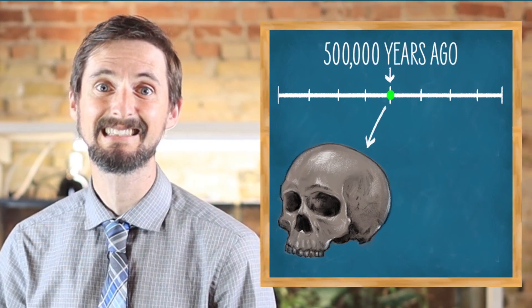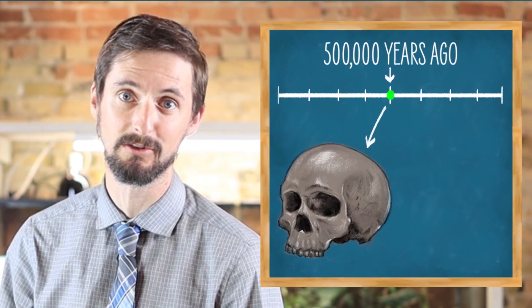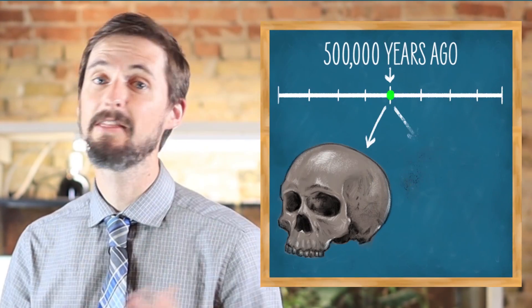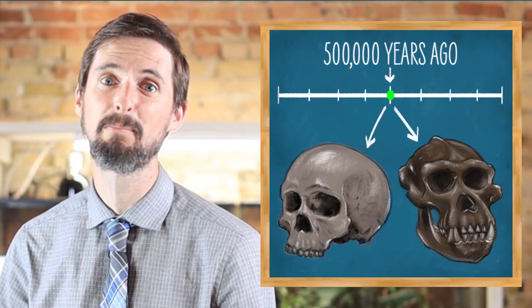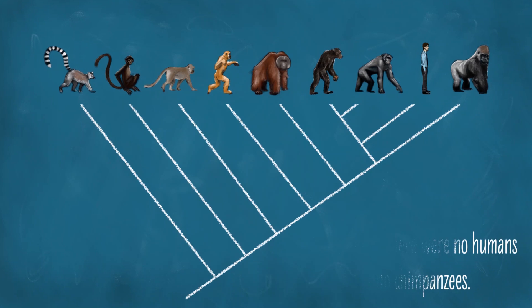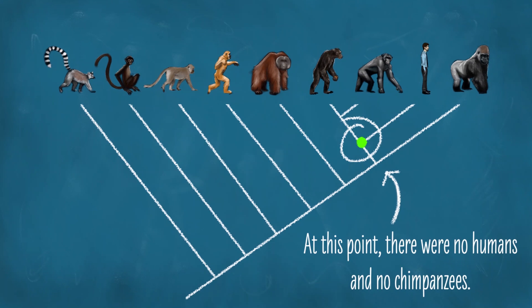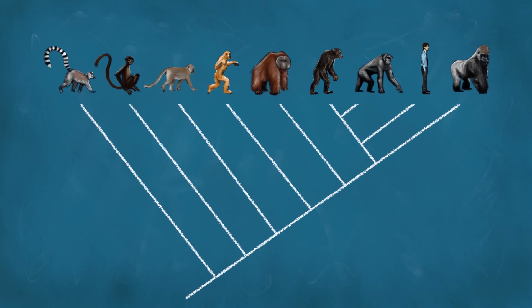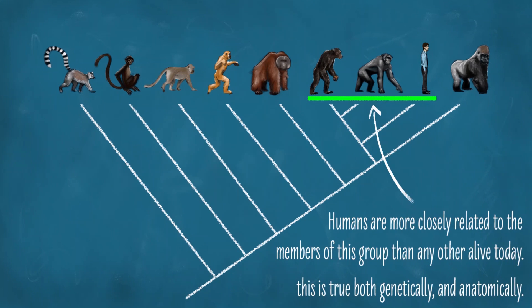Chimpanzees, New World and Old World monkeys exist now. They're not our ancestors any more than we are their ancestors. The oldest evidence we have of modern humans is less than half a million years old, and the oldest chimpanzee fossils are only a bit older than that. When the ancestors of humans and the ancestors of chimpanzees split, there were no humans or chimpanzees.